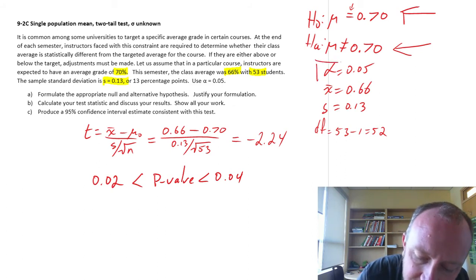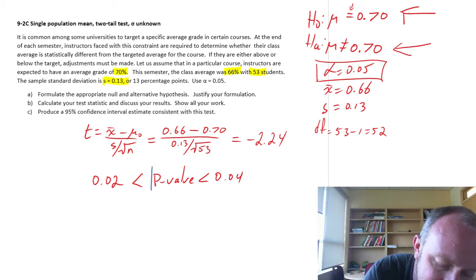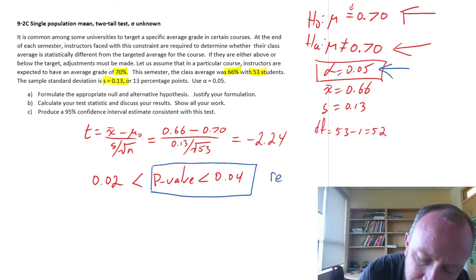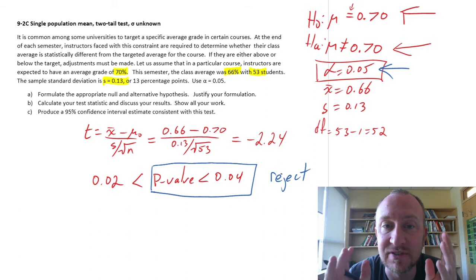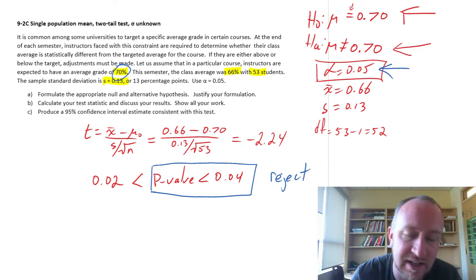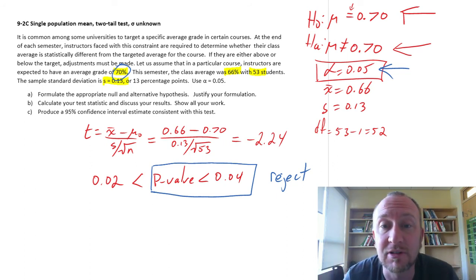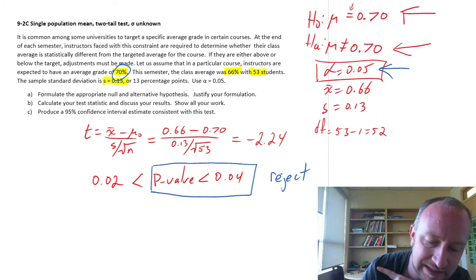Alpha here was 0.05. So I can look at my results on my p-value. And if it's less than 0.04, then I know it's less than 0.05. So we can comfortably reject. In other words, this is statistically different from a mean of 70. So you're not achieving your target average of 70%. So you have to take some corrective action here to boost up your grades a little bit because you're not on target. Okay, now we've got everything for part b. We've discussed our results.